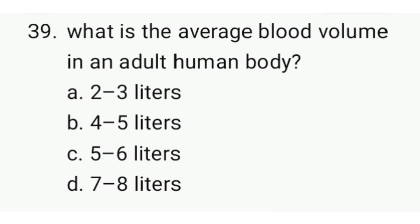What is the total blood volume in the normal human body? The correct option is C — 5 to 6 liters.